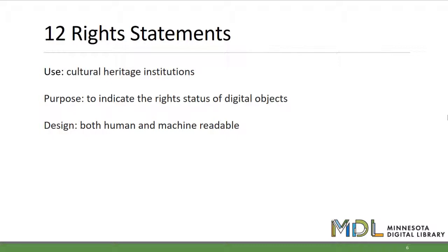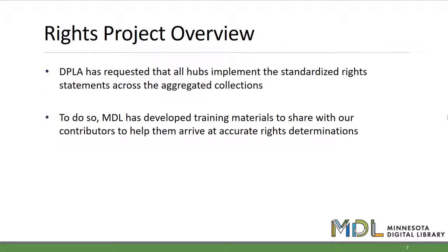There are 12 rights statements at rightsstatements.org. These 12 standardized rights statements are high-level summaries of the underlying rights statuses of the digital objects they apply to. They can be used by cultural heritage institutions to indicate the rights status of digital objects that they make available online, either on their own website or via aggregation platforms. The rights statements have been designed with both human users and machine users such as search engines in mind, and are provided as a linked data vocabulary. The Minnesota Digital Library is asking their contributors to Minnesota Reflections to use the standardized rights statements at rightsstatements.org, at the request of DPLA, but also because it is a good idea. Having these rights statements in place makes it easier for users to know what they can do with the material they encounter, and encourages reuse and sharing. Our project team has developed an array of training materials to assist in this process.